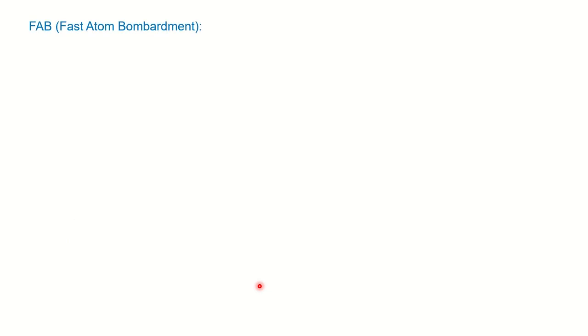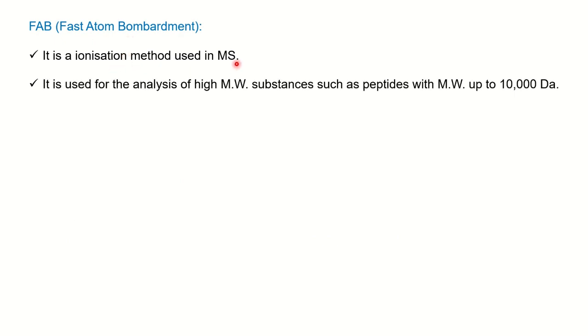The next is FAB. The full form is fast atom bombardment. Again this is an ionization method used in mass spectroscopy and it is used for the analysis of high molecular weight substances such as peptides with molecular weight up to 10,000 dalton.